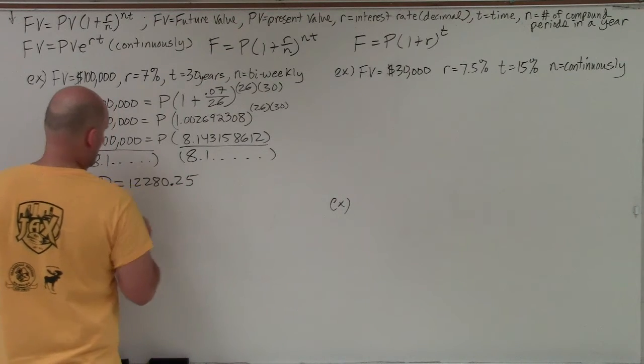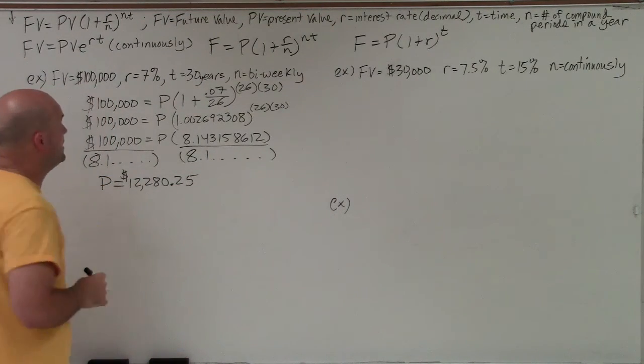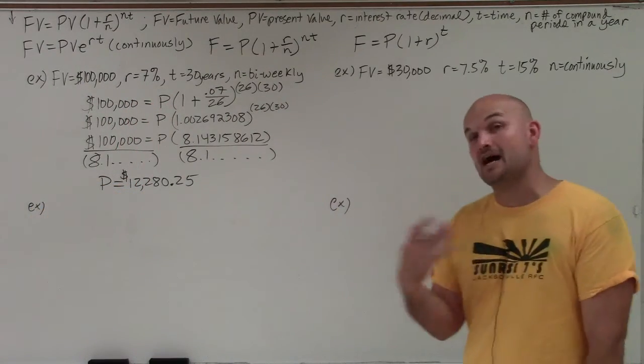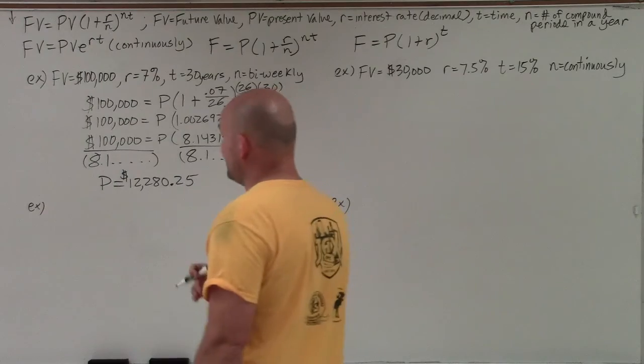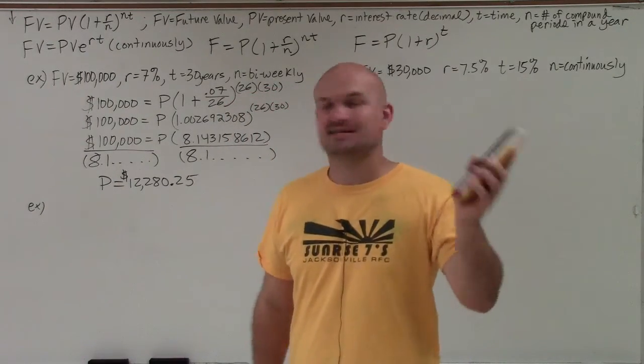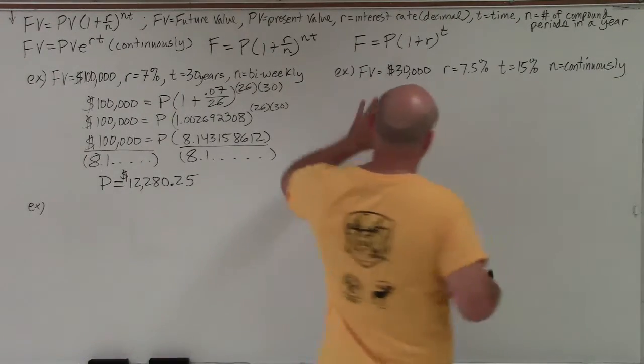$12,280.25. And again, that's in money. So therefore, if I want to earn $100,000 at the end of 30 years, and it's going to be compounded biweekly at an interest rate of 7%, that means I need to invest $12,280.25 right now.